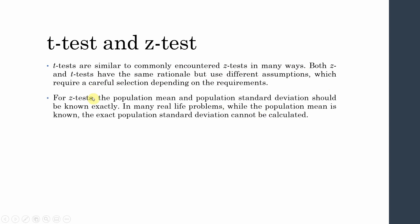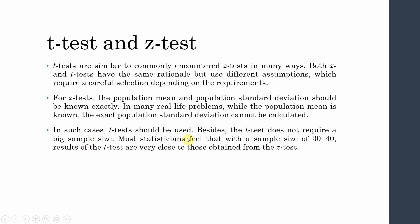For the z-test, the population mean and population standard deviation should be known. For the t-test, you work with a sample. In many real-life problems, while a standard value for the population mean may be known, the exact population standard deviation cannot be calculated. In such cases, the t-test should be used because you do not have exact population parameters.